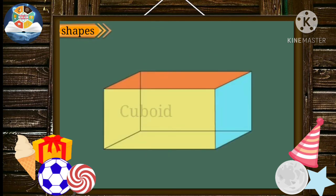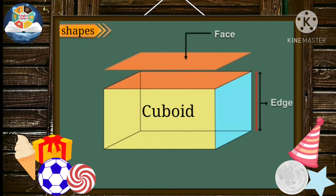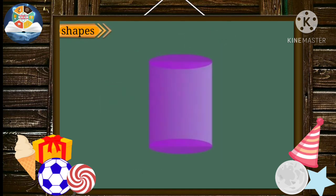This is a cuboid. It looks like a pencil box or a brick. It also has six faces, twelve edges and eight vertices.